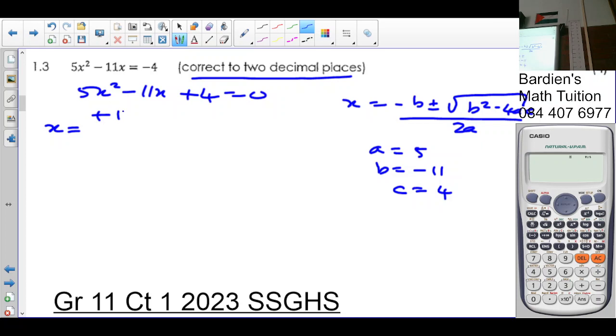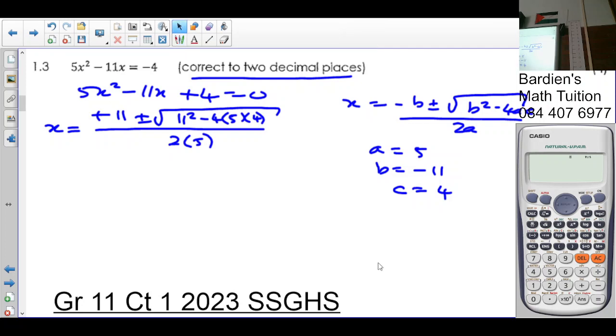So x equals minus b, so it's plus 11, plus minus the square root of 11 squared minus 4 times a is 5 times c is 4, over 2a. Because of the square root symbol, you won't be able to see it because of the mark itself. We're using the formula, so I calculate. I'll put the plus or minus, I'll just put plus first. That's 11 plus square root of 11 squared minus, times 5 times 4, over 2 times 5. Press equals, that gives you 1.74. So x equals 1.74.